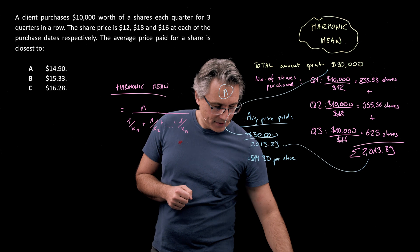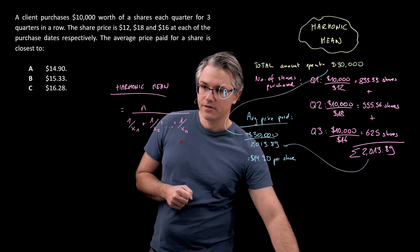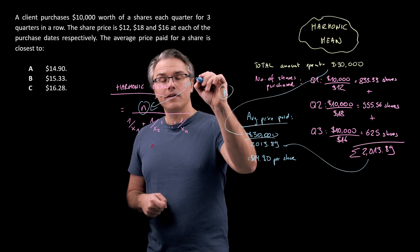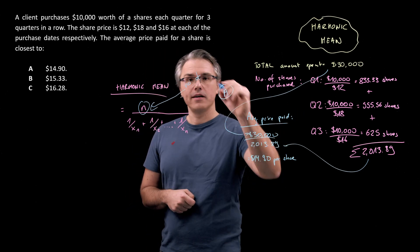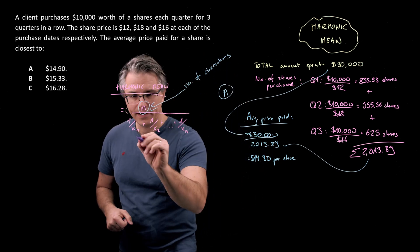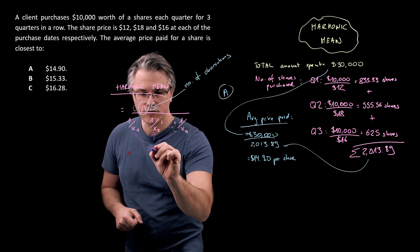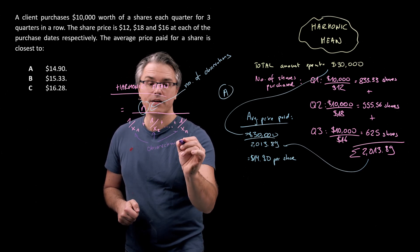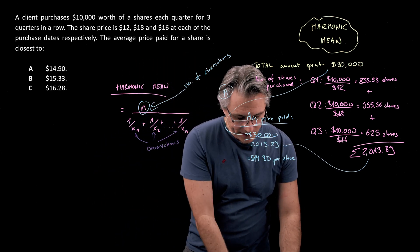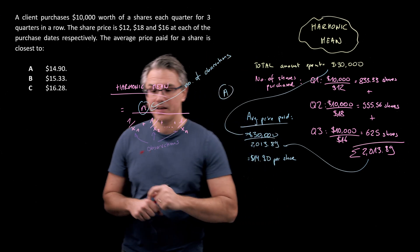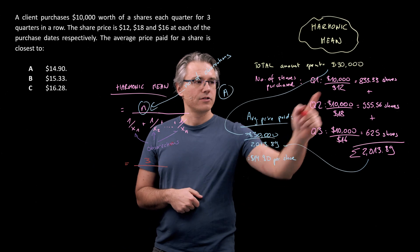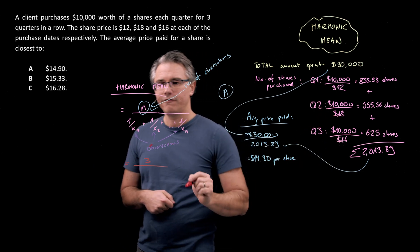Now, the N stands for the number of observations here, so the three different prices in our case, because observations are going to be price points. And the X's are the actual observations, the actual prices themselves. So if we now apply this to the scenario at hand, we would have three price points. The first one was 12, the second was 18, and the third one was 16.